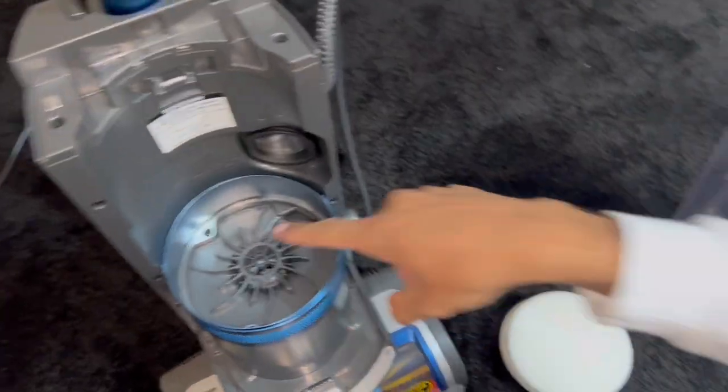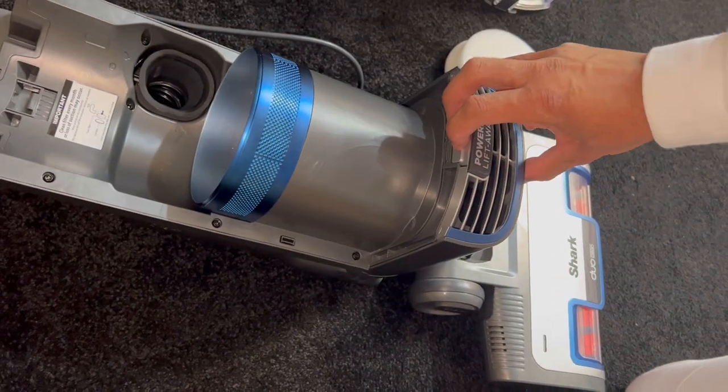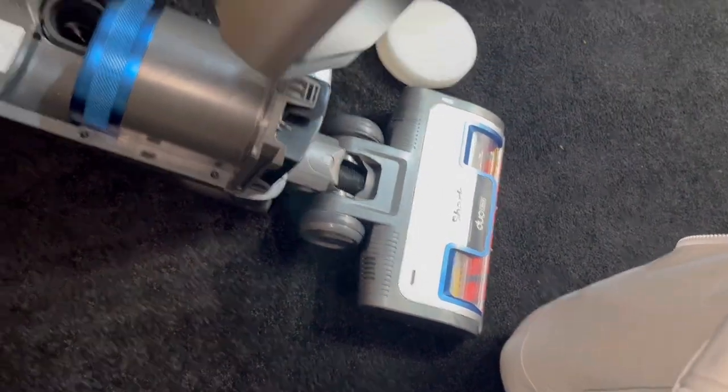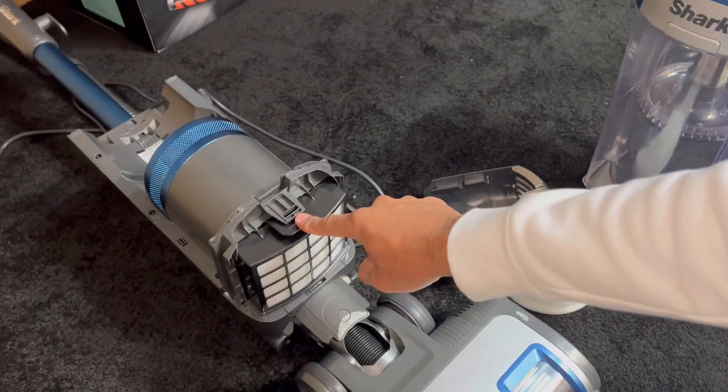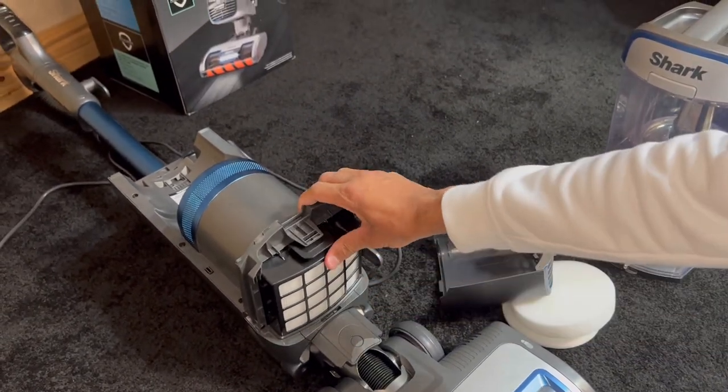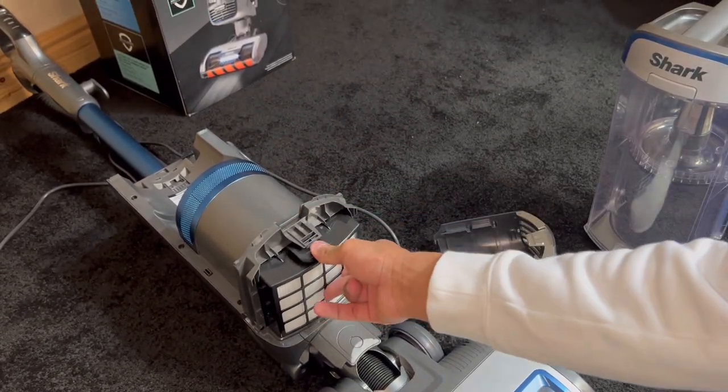There's your motor in there. Press this release catch, pull this grill off. That's the exhaust vent. That is your HEPA pleat filter, which has a nice secure lock on it either way.